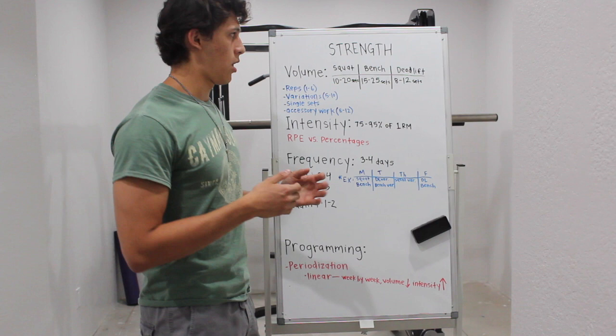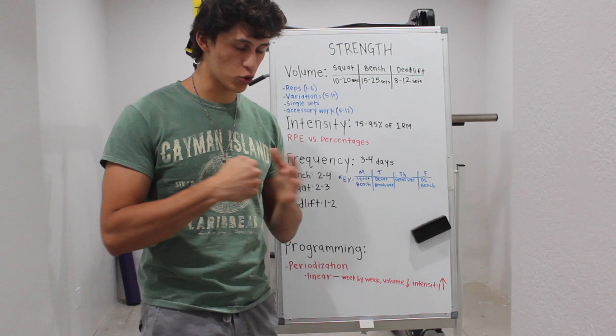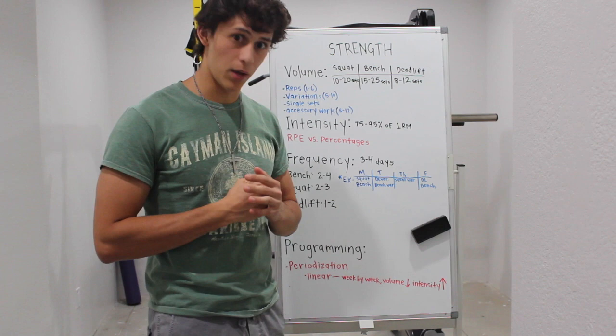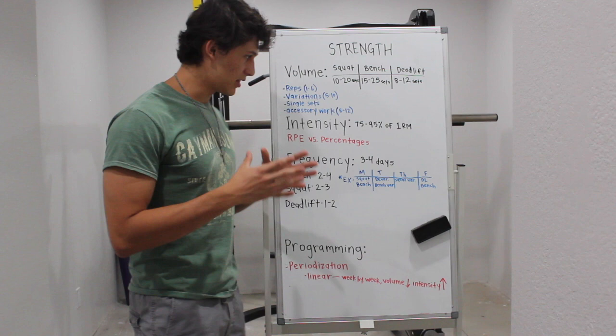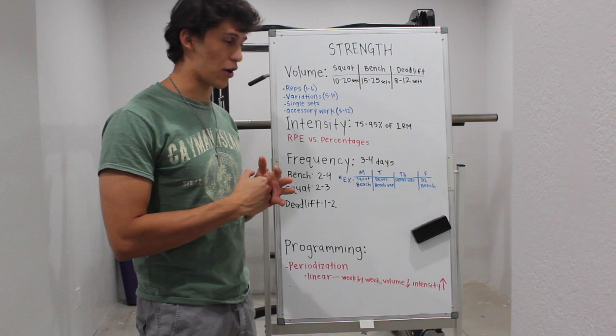My deadlift currently sits at 455, squat is 355, and my bench press is 225. Anyways, now getting into intensity. This was not a huge factor for hypertrophy, but when it comes to strength it is very important.